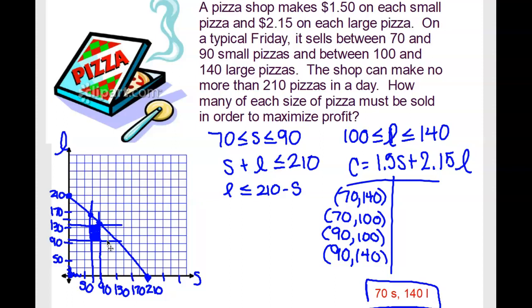The shop can make no more than 210 pizzas in a day. So that is where small plus large has to be less than or equal to 210. How many of each size of pizza should be sold?